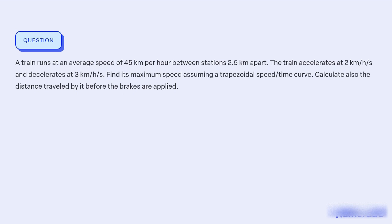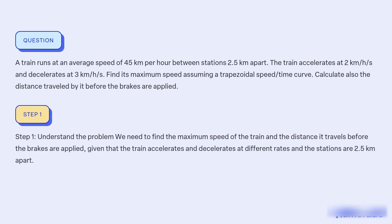What is the maximum speed of a train with a trapezoidal speed-time curve, given its average speed, acceleration and deceleration, and how far does it travel before the brakes are applied? Step 1: Understand the problem. We need to find the maximum speed of the train and the distance it travels before the brakes are applied, given that the train accelerates and decelerates at different rates and the stations are 2.5 km apart.